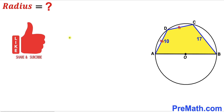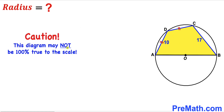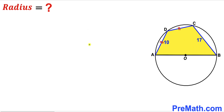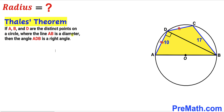Please don't forget to give a thumbs up and subscribe, and keep in mind that this figure may not be 100% true to scale. Let's get started. We'll focus on vertices A, B, and D — all on the circle — and connect points B and D. Now let's recall the Thales theorem.